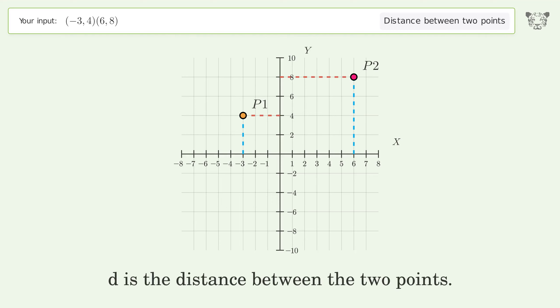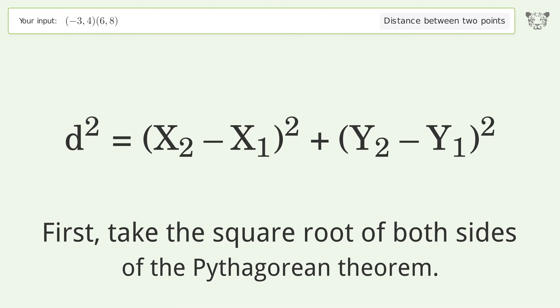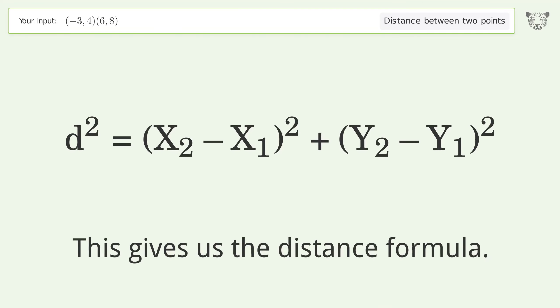d is the distance between the two points. First, take the square root of both sides of the Pythagorean theorem. This gives us the distance formula.